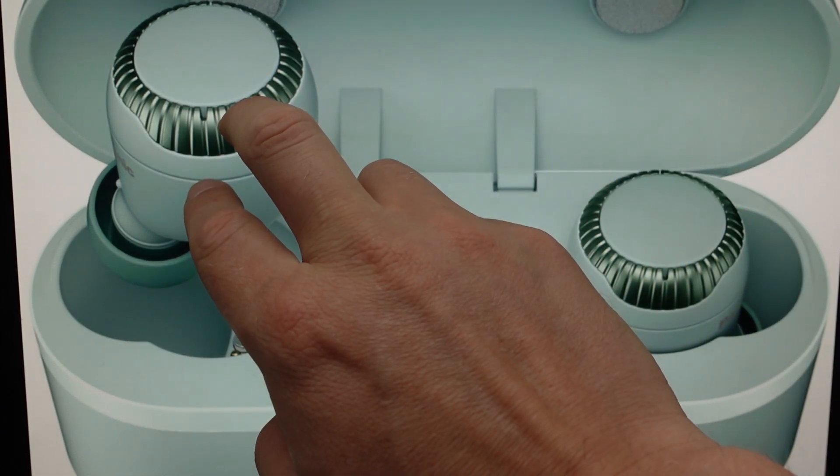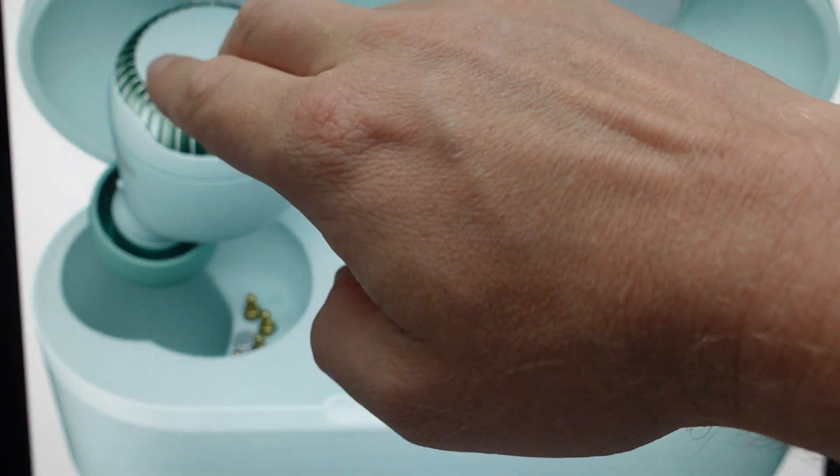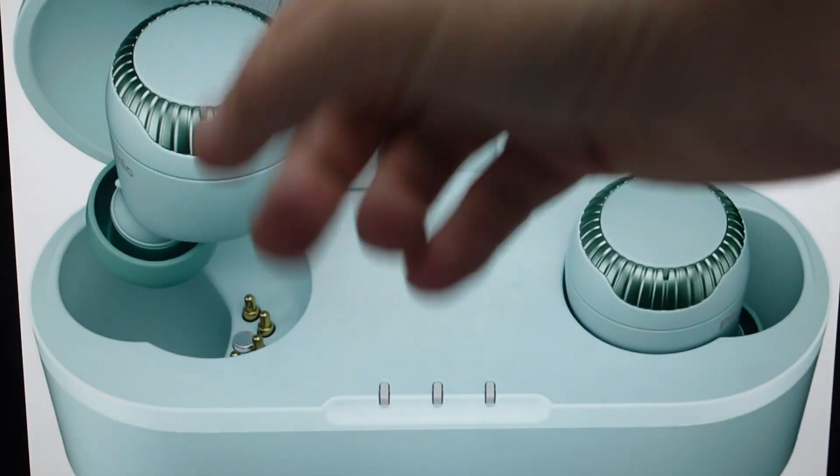And then we're just going to do the same thing with this one. We're going to take it out, press and hold for seven seconds until we get that alternate blue, red. Then we're going to release, hold again for 10 seconds until it blinks blue quickly and turns off.